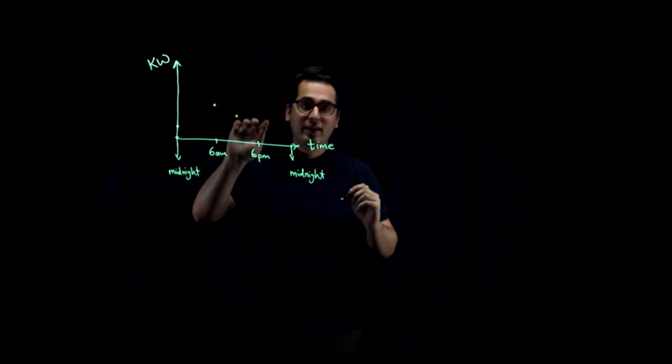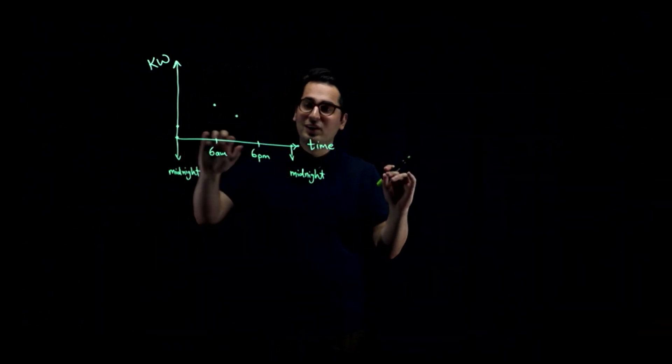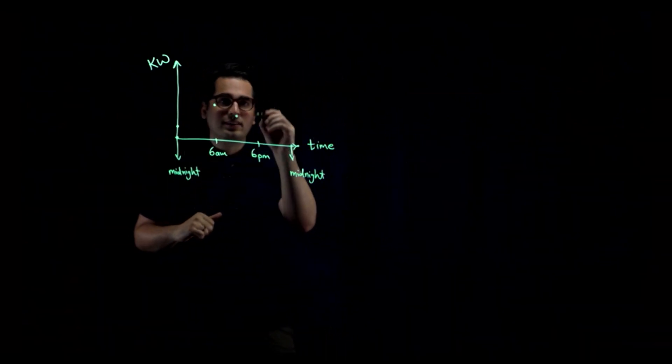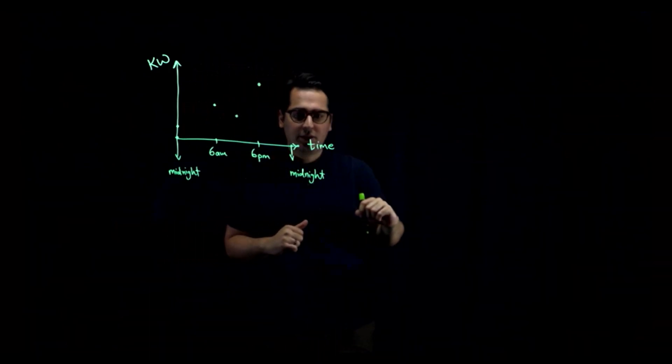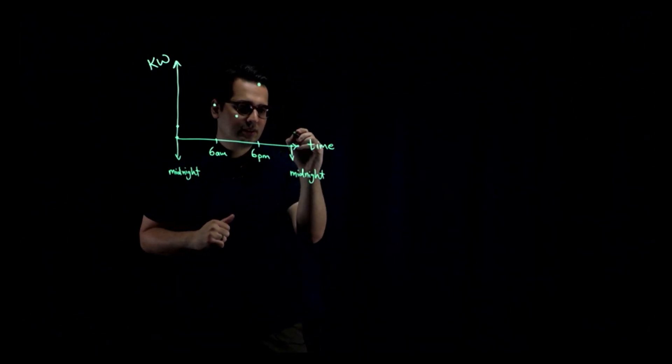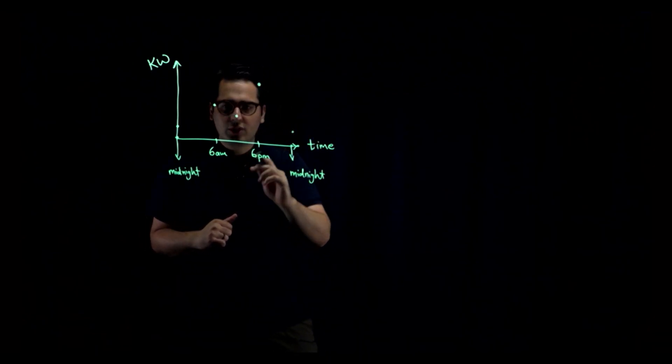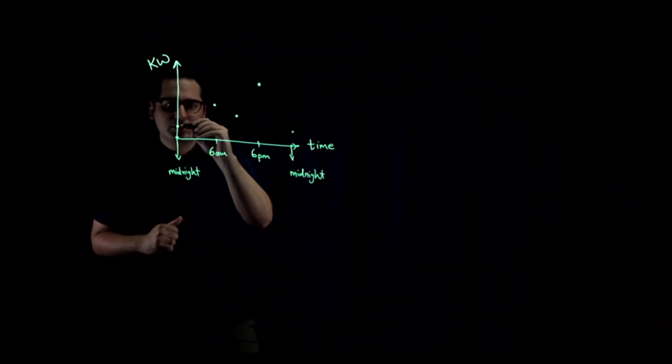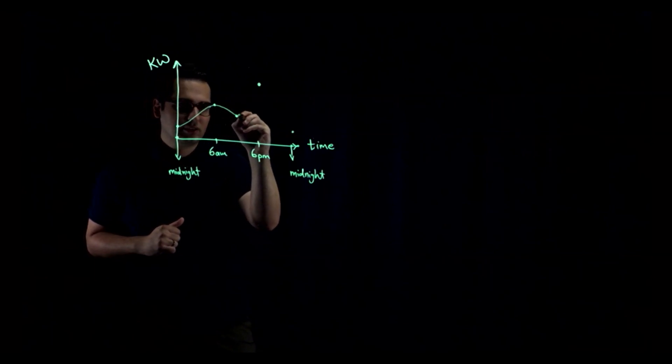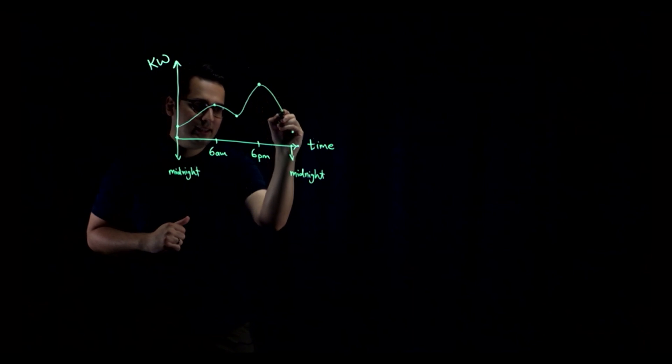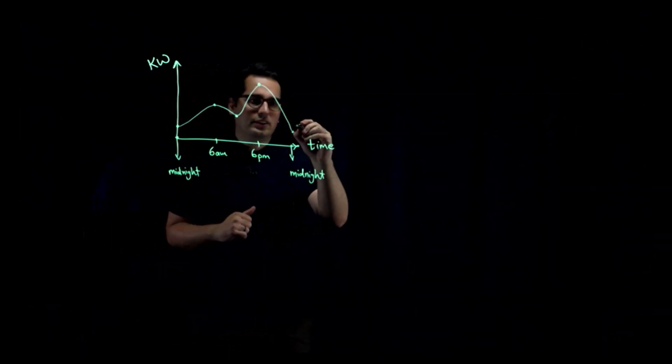And then once you're back home, you're done with work or school, you're going to again use a lot of electricity. Then the demand is high. And this peak is normally higher than this peak. And then again, midnight, the demand is low. So if I connect these dots, you will see a general trend of daily electricity demand.